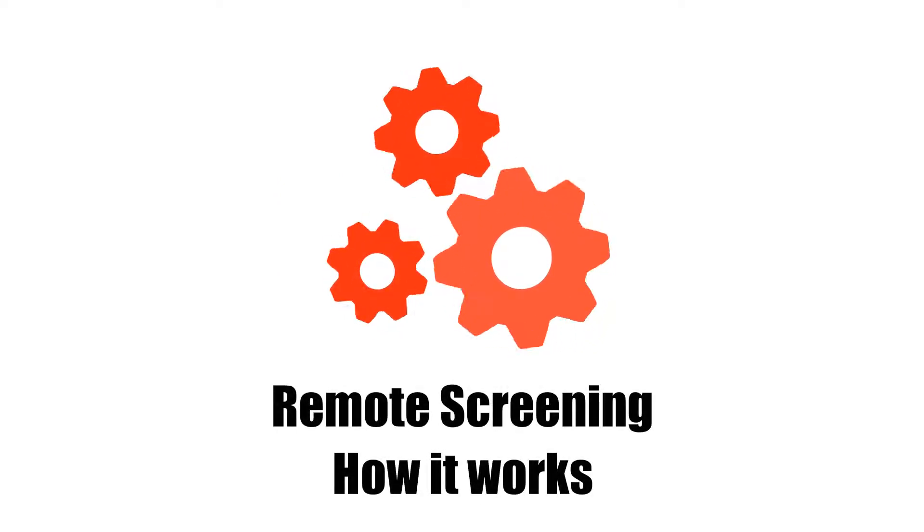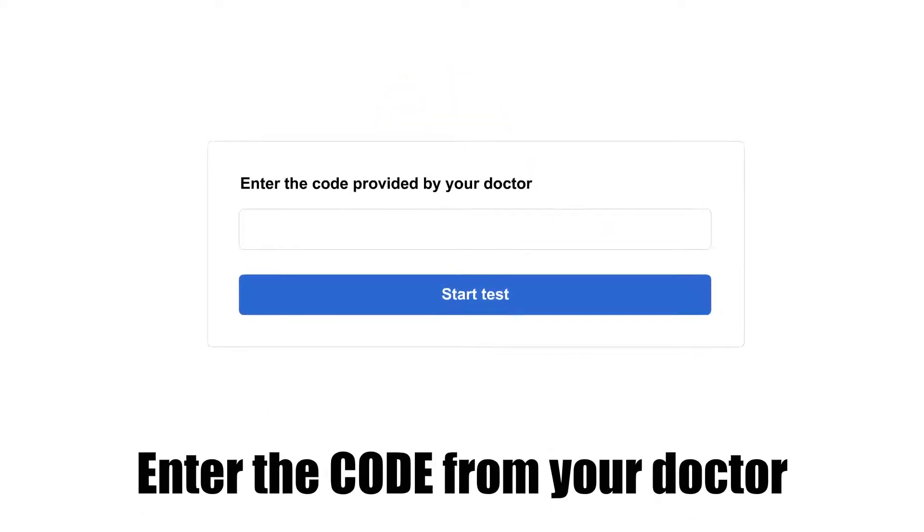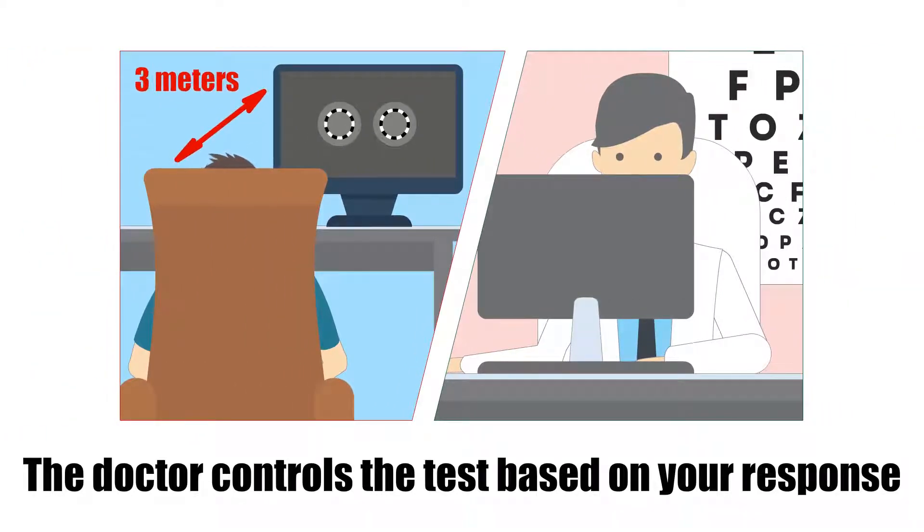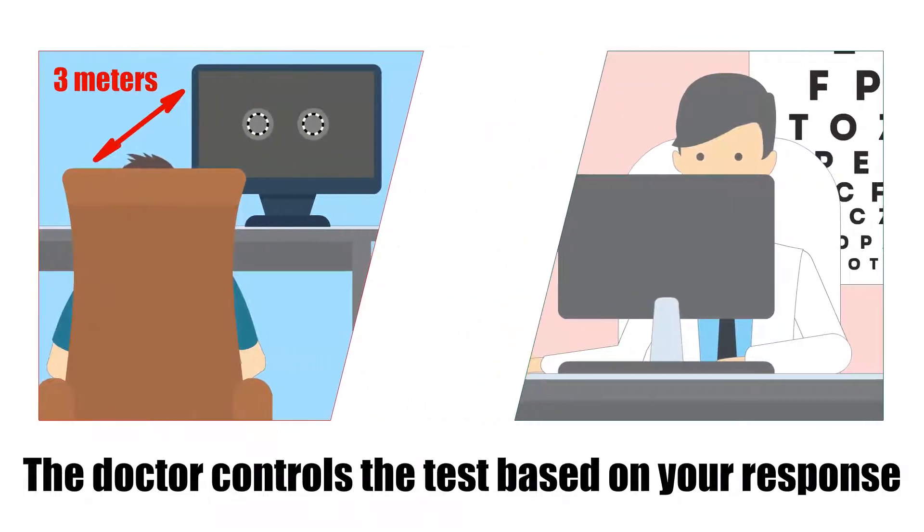Here's how the remote screening works. Your doctor will send you a six-digit code, which you enter on your phone, tablet, or desktop. Your doctor is then able to control the test from his remote location while you simply indicate the location of the spinning Diop as either left or right.